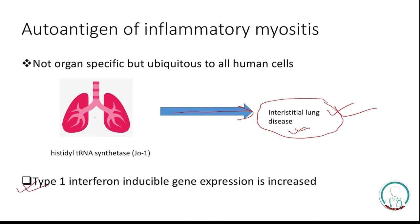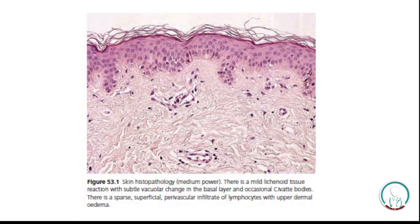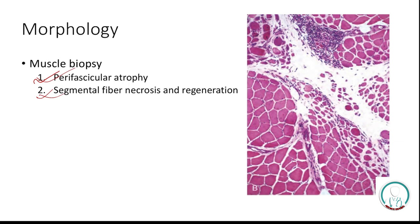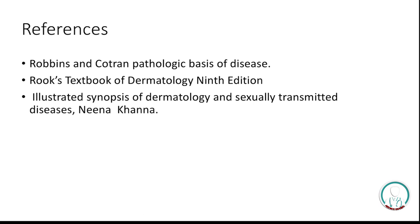The latest theory is the type I interferon response, which may be responsible for the perifascicular atrophy in dermatomyositis. Histologically, there is lichenoid tissue reaction with vacuolar changes in the basal layer with some civatte bodies. Morphologically, there is perifascicular atrophy of the muscle, segmental fiber necrosis, and regeneration. These are the references. Thank you.